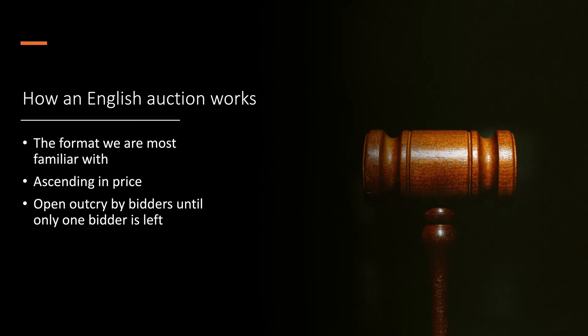First, how an English auction works. This is the format we are most familiar with. First, we observe ascending prices — bidders bid up the prices, openly outcrying their bids until there is only one bidder left.